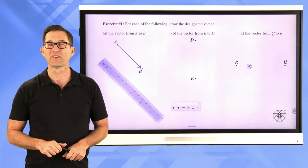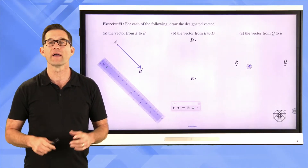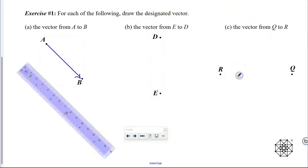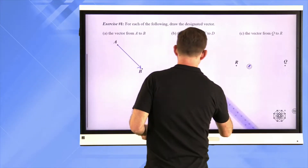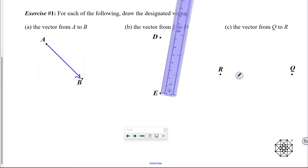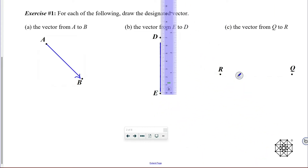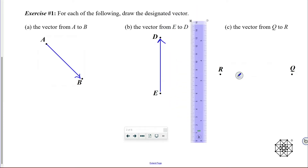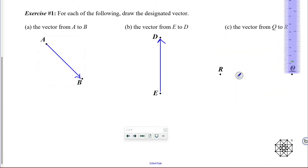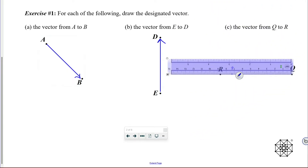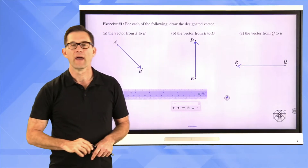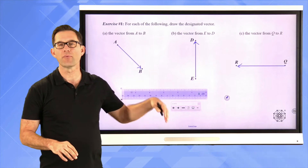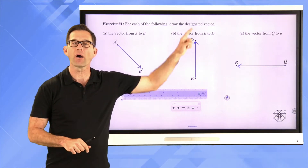You can probably do letter B and letter C pretty easily — go ahead and pause the video and draw those two vectors. The vector from E to D is simple enough — just put the straight edge at E and rotate it up. And the vector from Q to R — the key thing is making sure we are drawing the vector in the right direction, from Q to R. Again, the vector is not about point E and D specifically; it's about how far and in what direction.